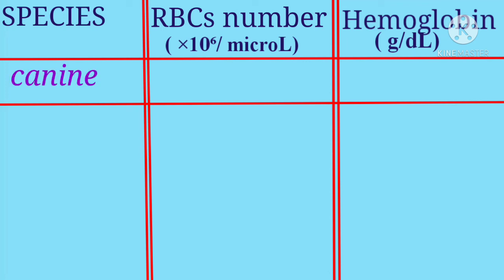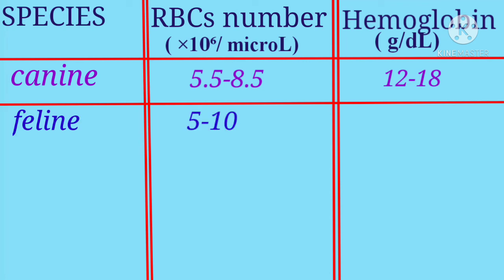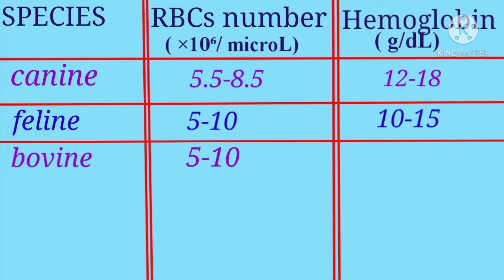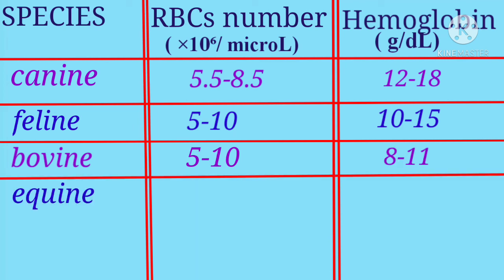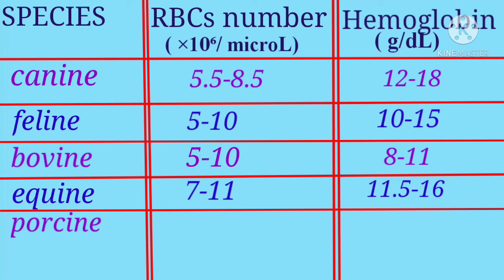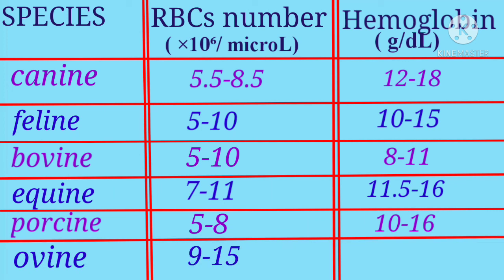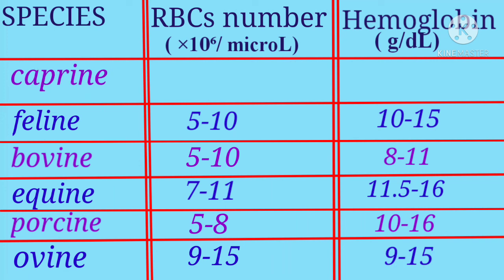Canine: RBC number is 5.5 to 8.5 and hemoglobin is 12 to 18. Feline: RBC number is 5 to 10 and hemoglobin is 8 to 11. Equine: RBC number is 7 to 11 and hemoglobin content is 11.5 to 16. Porcine: RBC number is 5 to 8 and hemoglobin is 10 to 16. Ovine: RBC number is 9 to 15 and hemoglobin content is also 9 to 15. Caprine: RBC number is 8 to 18 and hemoglobin content is 10 to 16.